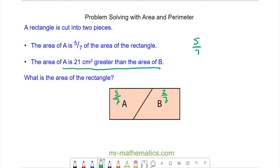So the difference between 5/7 and 2/7 must be 21 centimeters squared, and the difference of these two fractions is 3/7. We can work out 1/7 by dividing both sides by 3.